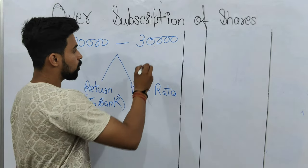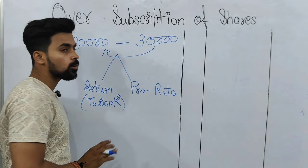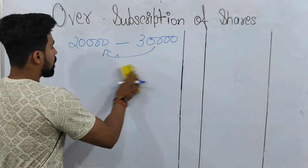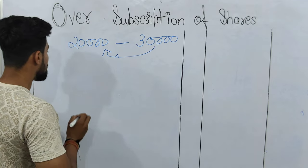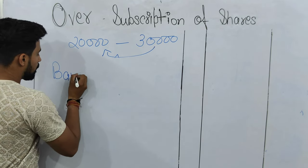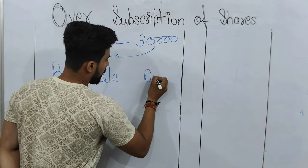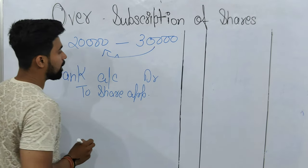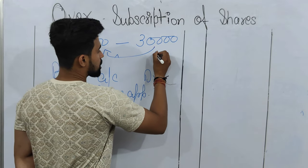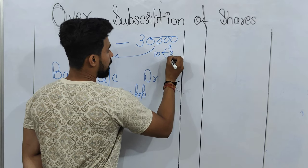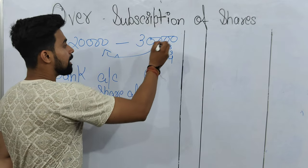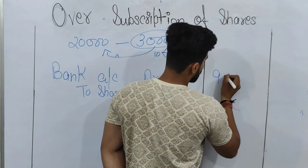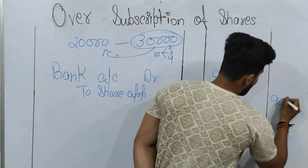In the return method, whatever extra shares the public has applied for, that excess amount is returned to the bank. The first entry is: Bank account debit to Share Application. The amount here is based on all applicants — that is 30,000 into 3 = 90,000 and 90,000.